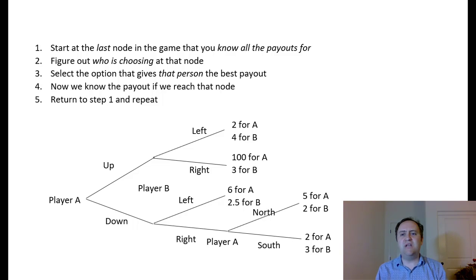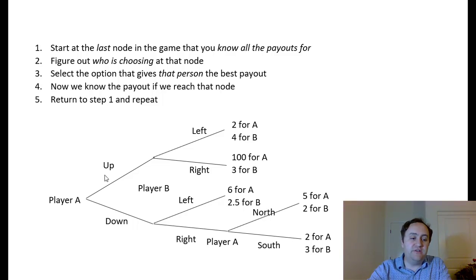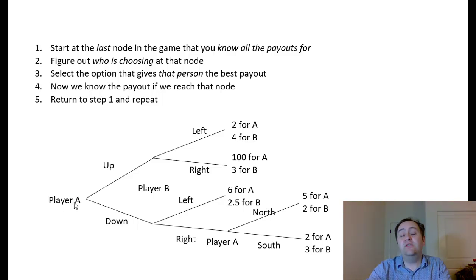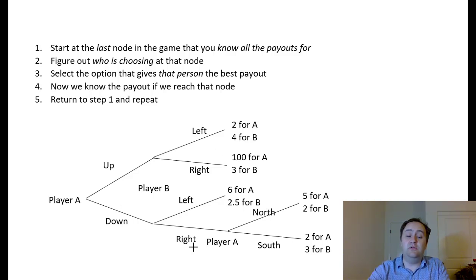So let's take this game as an example. This is a very generic game set up as a tree — we follow this tree as the story of the game. Each node in the tree, each place where the tree splits into branches, has a player's name on it — that is the person making the decision at that point. Player A makes the first choice: they can go up or they can go down. After player A moves, it's player B's turn. If player A goes up, B can go left or right. If player A goes down, player B can also go left or right.